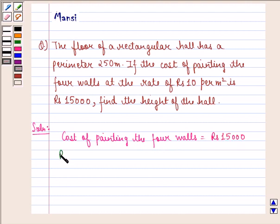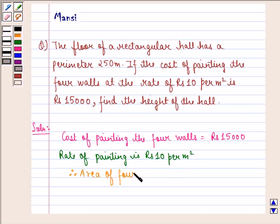The rate of painting is rupees 10 per meter square. Therefore, we can say that area of four walls is equal to cost of painting the four walls divided by rate of painting.